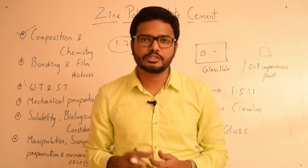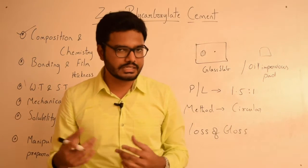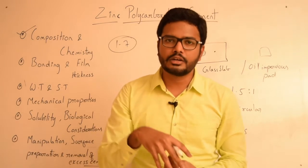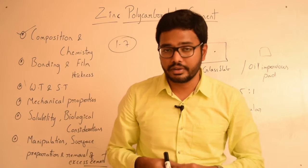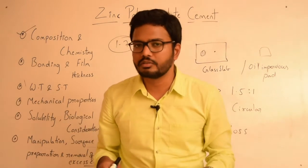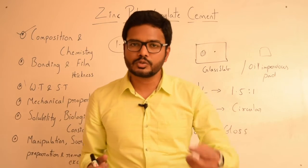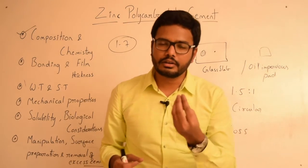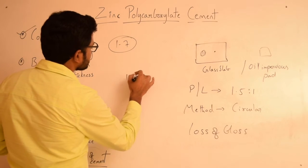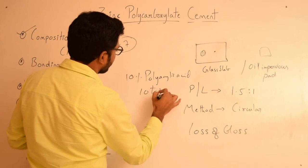Regarding surface preparation, zinc polycarboxylate cement is primarily used as a luting cement due to its film thickness of less than 25 microns. When placing a noble metal alloy crown on a prepared tooth, the tooth surface must be very clean. If the surface contains impurities such as smear layer, debris, or water contamination, the cement will not bond chemically. To overcome this, the prepared tooth surface should be conditioned using 10% polyacrylic acid for 10 to 15 seconds.